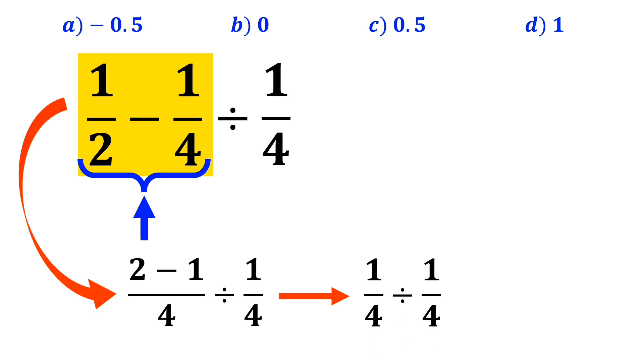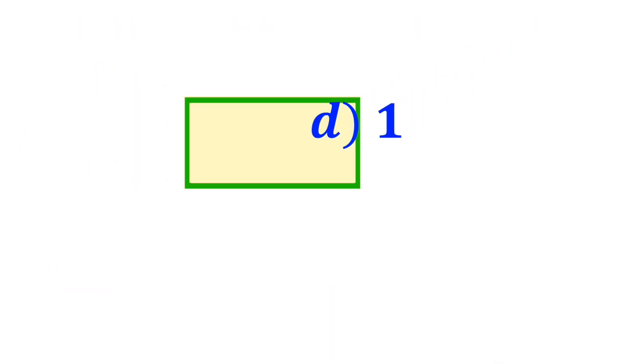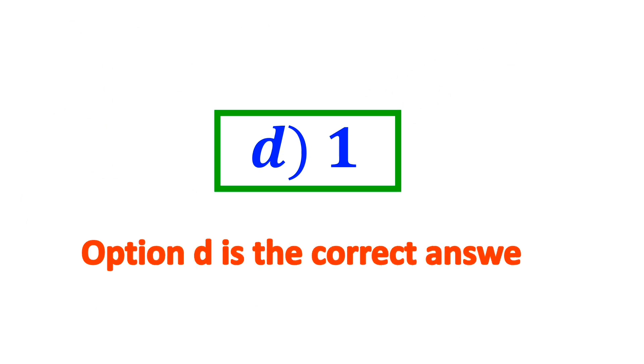And they say that in the final step the result of dividing these two fractions is one, and immediately say that option D is the correct answer to this question. But that's definitely wrong.